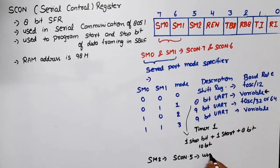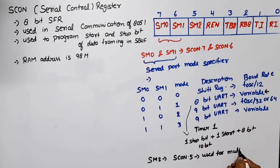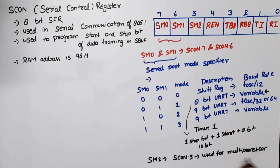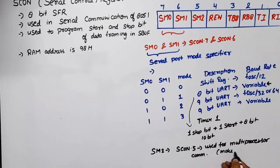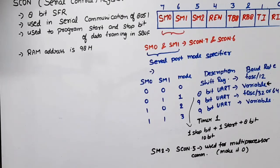SM2, which is SCON.5, is used for multi-processor communication. Since we are not doing multi-processor communication here, we will keep it zero and ignore it.